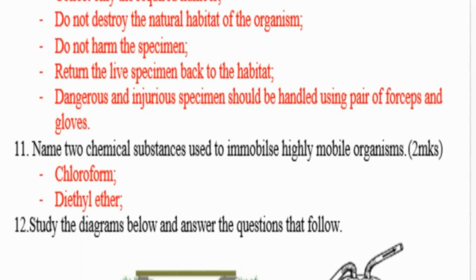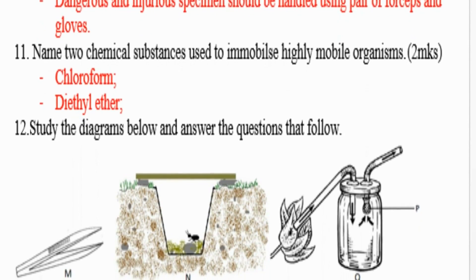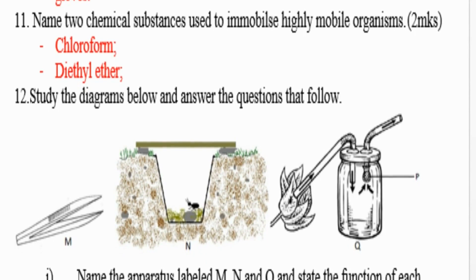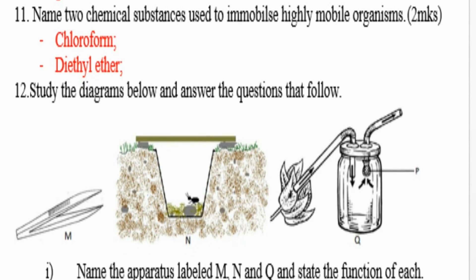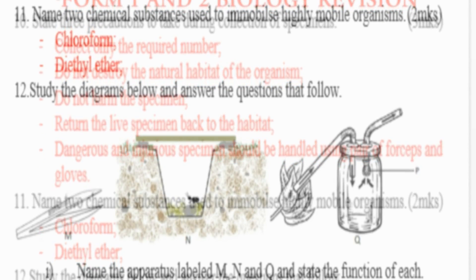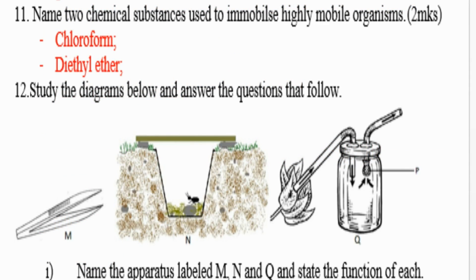Question number 12: Study the diagram below and answer the questions that follow. Part one: Name the apparatus labeled M, N, and Q, and state the function of each. You can also see another part labeled P in the diagram.